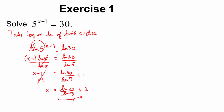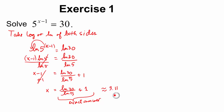This is the exact solution. Once you plug it in the calculator it becomes an approximation — approximately equal to 3.11. Depending on what Hawks asks: if it asks for an exact answer, give the exact form; if it asks for an approximate solution, give the decimal to the specified number of decimal places.